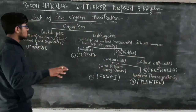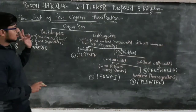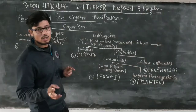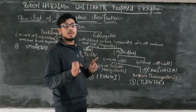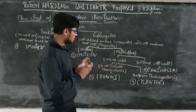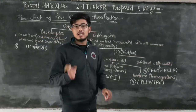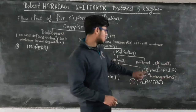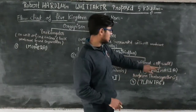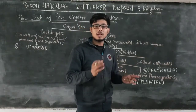Let's recall this process. The first part is Monera, which has a poorly defined nucleus. The second part is Protista, which has a well-defined nucleus. The third part covers multicellular organisms, which are divided into two parts: Fungi, which do not perform photosynthesis, and Plants, which do perform photosynthesis. The last group, Animalia, cannot perform photosynthesis because they do not have a cell wall.